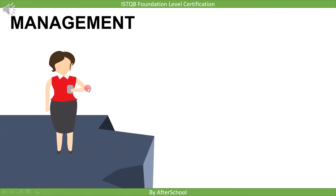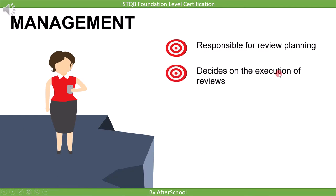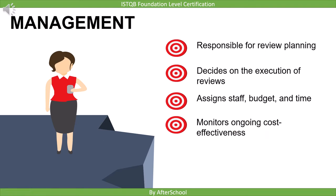Now let's see the responsibility of management. Management is responsible for review planning — all the tasks we perform in the review planning stage: defining scope, estimating effort, identifying review characteristics, selecting people, and defining and checking entry and exit criteria. Next, management decides on the execution of the review — in which phase of the development model we will perform the review activity. They also assign the staff, budget, and time, allocating resources and scheduling the review activity. Next, management monitors ongoing cost effectiveness, looking at whether the review added any benefits to the project in terms of effort and benefits.